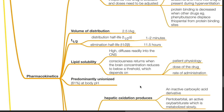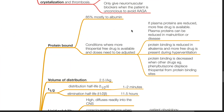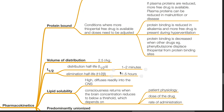Pharmacokinetics of thiopenthal. It is 85% protein bound, mostly to albumin. Conditions where more thiopenthal free drug is available and doses need to be adjusted include: if plasma proteins are reduced, more free drug is available — plasma proteins can be reduced in malnutrition or disease. Protein binding is reduced in alkalemia and more free drug is present during hyperventilation. Protein binding is also decreased when other drugs such as phenylbutazone displace thiopenthal from protein binding sites. The volume of distribution is 2.5 liters per kg, the distribution half-life is 1 to 2 minutes, and the elimination half-life is 11.5 hours.